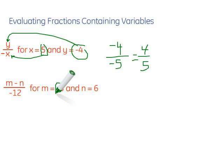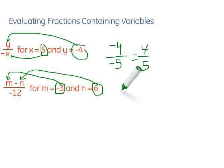Same kind of thing here. We're given a value for m and n. m is negative 3, so that's going to go in right there, and n is 6, so that's going to come right over here. Take a look at what we get when we substitute those in. We get negative 3 minus 6 over negative 12.